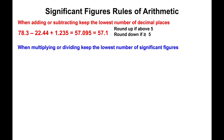When multiplying or dividing, you pay attention to significant figures — not decimal places. Using the same numbers but now multiplying and dividing: divide 78.3 by 22.44, then multiply your answer by 1.235, and you get the following value from your calculator.